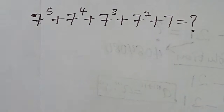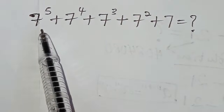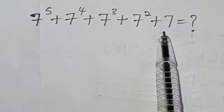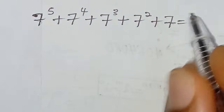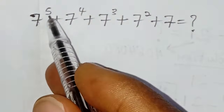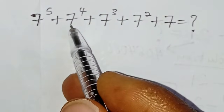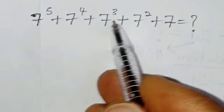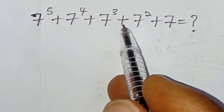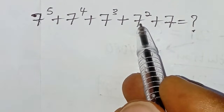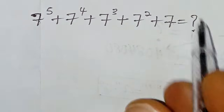Hi everyone, welcome. Today we simplify the expression: seven to the power of five, plus seven to the power of four, plus seven to the power of three, plus seven to the power of two, plus seven. What does this equal?